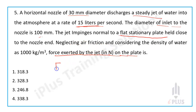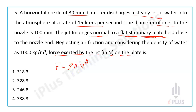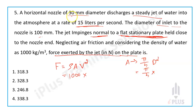For a flat stationary plate held normal to the jet, the force equation is F equals rho A V squared. Here rho is 1000 kg per meter cube for water. Area A equals pi by 4 times D squared, where D is 30 mm equal to 0.03 m. So A equals pi by 4 into 0.03 squared.